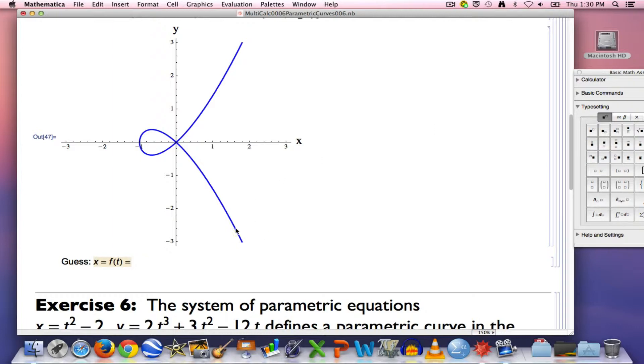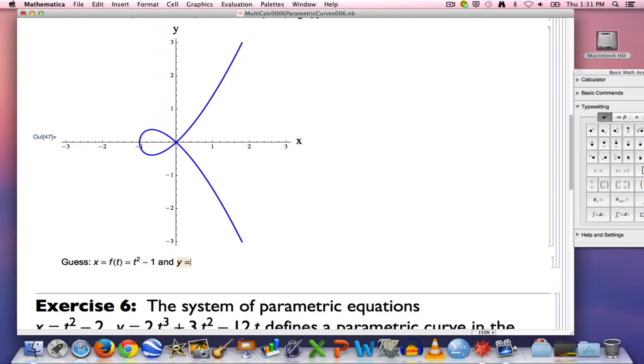Focus on the x-coordinate first. If we start down here in the lower right, x is going to start out positive, decrease down to negative values, have a minimum at x equals negative one, before increasing back into positive values again. The simplest example I can think of of a function that does that is f of t equals t squared minus one. And again, we're just sort of crossing our fingers and hoping that works.